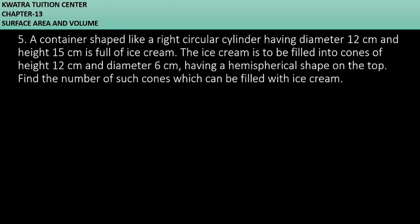Let's start with question number 5. A container shaped like a right circular cylinder having diameter 12 cm and height 15 cm is full of ice cream. So we have a container which is filled with ice cream. What are the dimensions? Diameter is 12, height is 15. So H is 15 cm and radius is 6 cm.